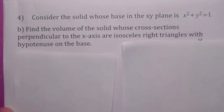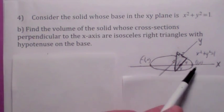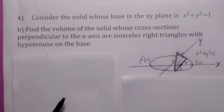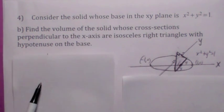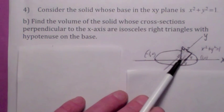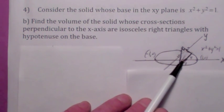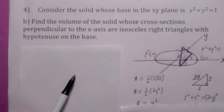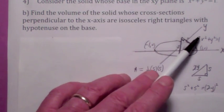Same region, x² + y² = 1, but now the cross-sections are isosceles right triangles. Slicing perpendicular to the x-axis gives us an isosceles right triangle slab with thickness Δx. Notice the hypotenuse lies on the base and that distance is 2y — twice the y-coordinate.